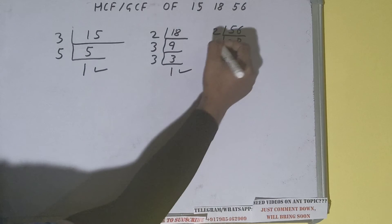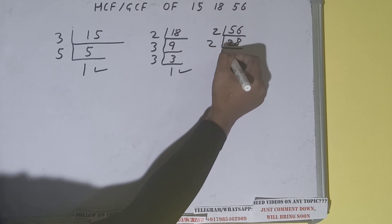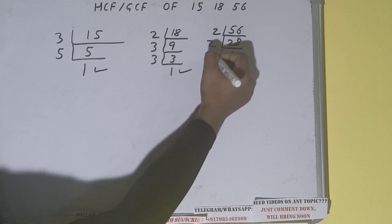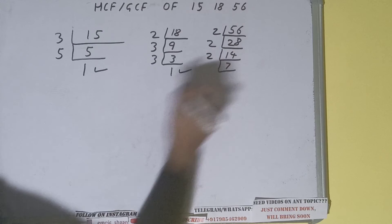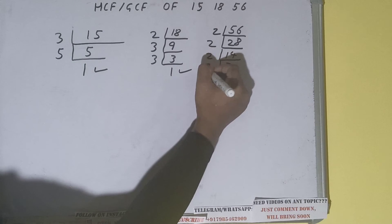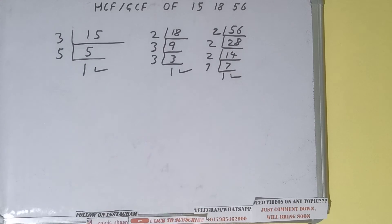Is 56 divisible by 2? Yes it is. So divide it and we'll be having 28. 28 is again divisible by 2, so divide it and we'll be having 14. Is 14 divisible by 2? Yes it is. Divide by 2 again and we'll be having 7. Is 7 divisible by 2? No — 7 is a prime number, so it is only divisible by itself, and we'll be getting 1.